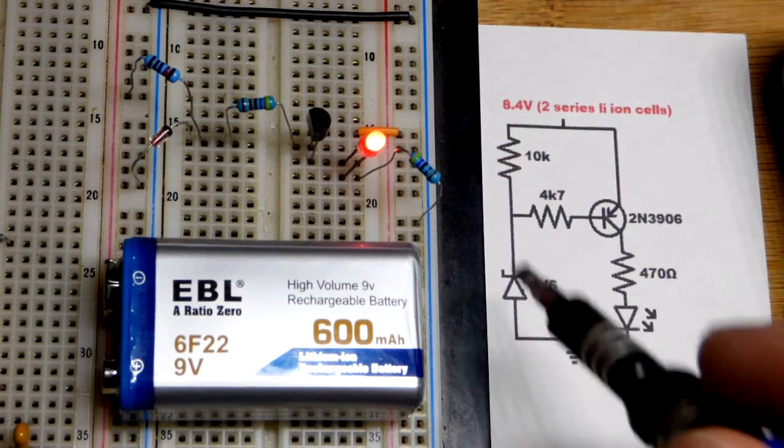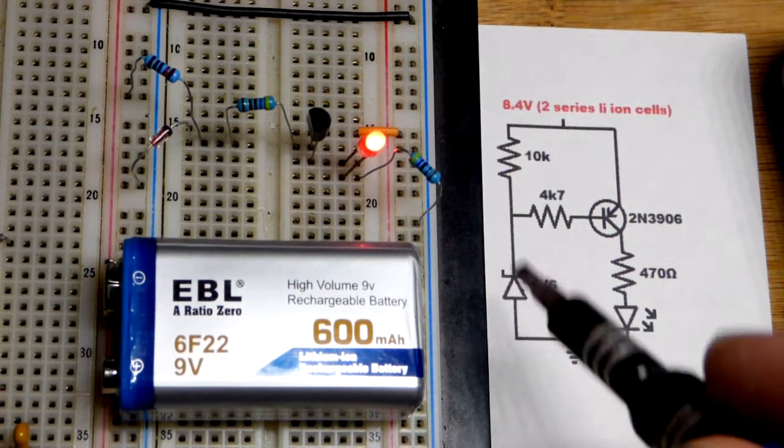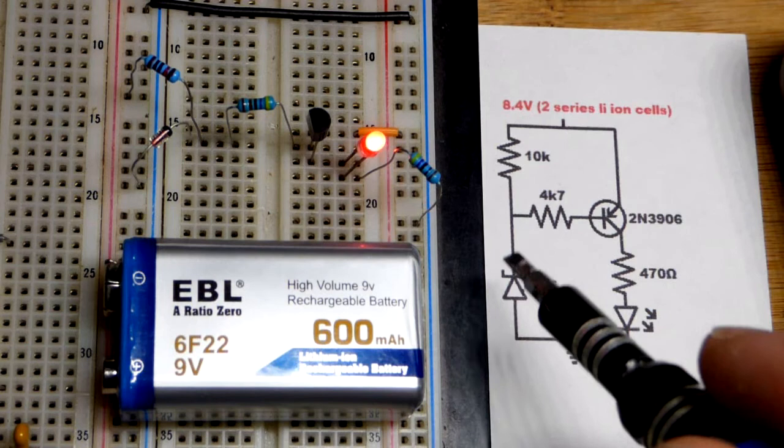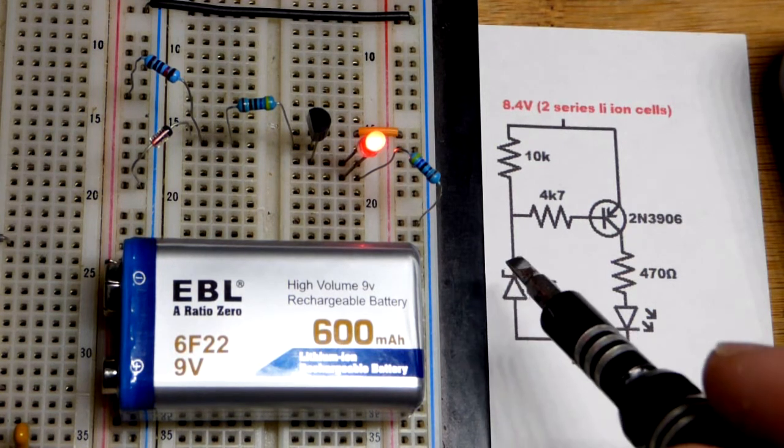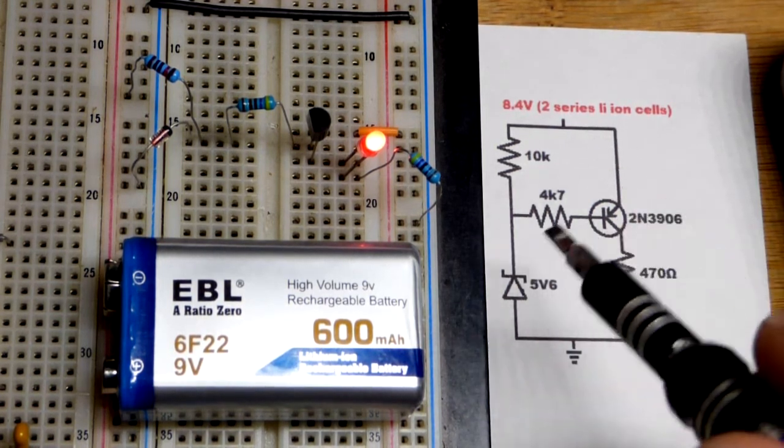And then we come to the Zener diode while it's reverse biased. It needs about 5.6 volts to conduct. So that builds up another 5.6 volts for a total of about 6.2 volts.